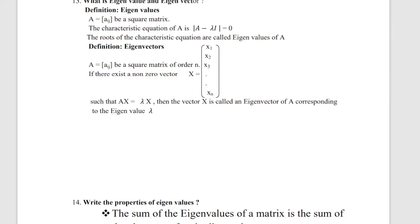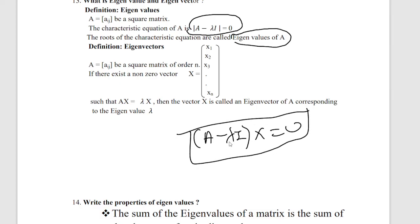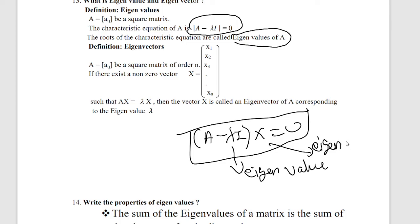What is an eigenvalue and eigenvector? The characteristic equation is determinant of (A minus lambda·I) = 0. The roots lambda of this equation are called eigenvalues. The corresponding vector x = [x1, x2] satisfying (A minus lambda·I)·x = 0 is called the eigenvector.